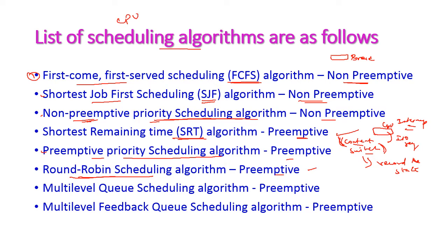Next is Round Robin scheduling algorithm, which is of course preemptive scheduling. Then multi-level queue scheduling algorithm — this is also preemptive. And multi-level feedback queue scheduling algorithm, which is also preemptive. Let us see all those things one by one.